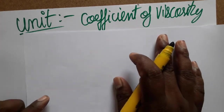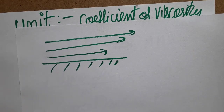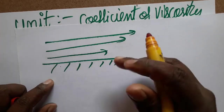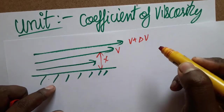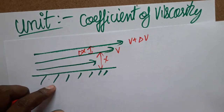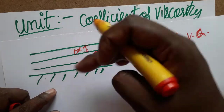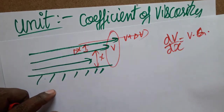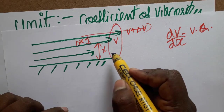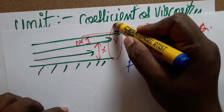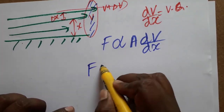First, I am going to show how the coefficient of viscosity is Newton·second per meter square. Imagine a liquid flowing from one end of a surface. As it moves away from the surface, velocity slowly increases. At distance x from the surface, velocity is v, and at distance x + dx, velocity is v + dv. The rate of change, dv/dx, is called the velocity gradient. In a circular pipe, the liquid's velocity is greatest at the center, producing a viscous force due to internal friction.